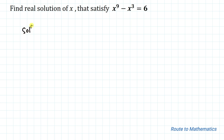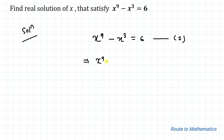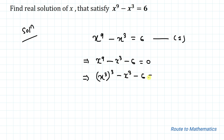So without any delay let's start the solution. We have x to the power 9 minus x cubed equals 6. Let's take it as equation 1. In the next step I will take this 6 to the left hand side, so we have x to the power 9 minus x cubed minus 6 equals 0. I can rewrite x to the power 9 as (x³)³.